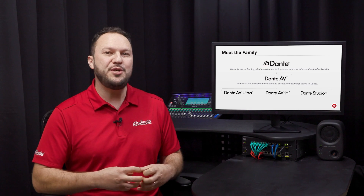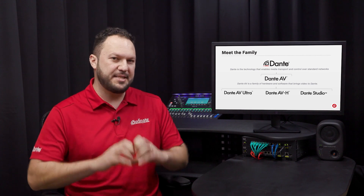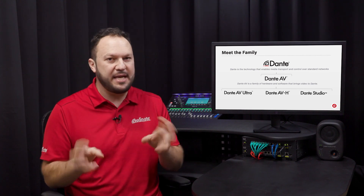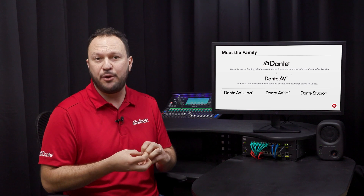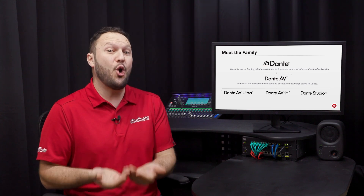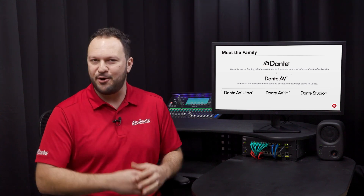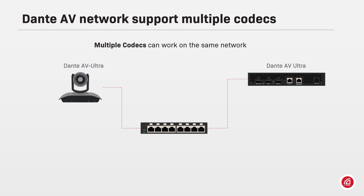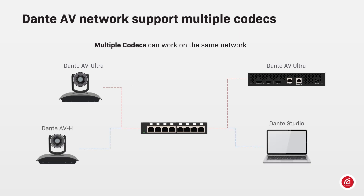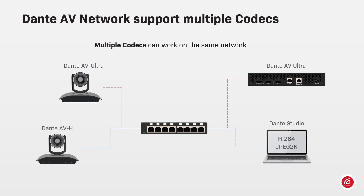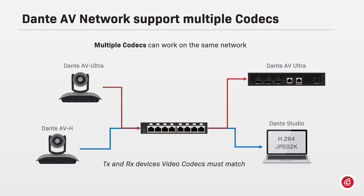In the same way as audio devices must match the sample rate to be able to subscribe to each other's channels, for video it's the codec that matters. The Dante AV network supports multiple codecs. It is perfectly possible to have multiple connections within a Dante AV network, each of them working with a different codec. If transmitter and receiver run the same codec, they will be able to communicate.